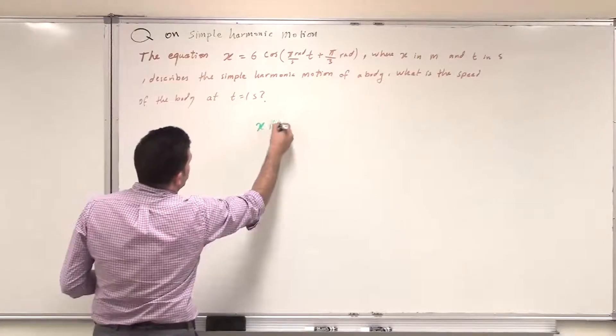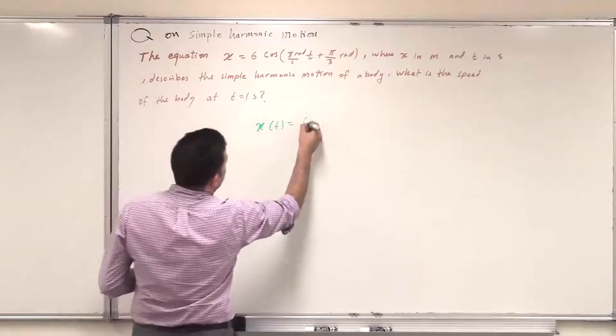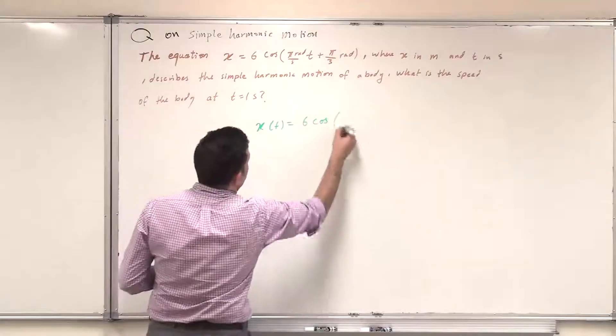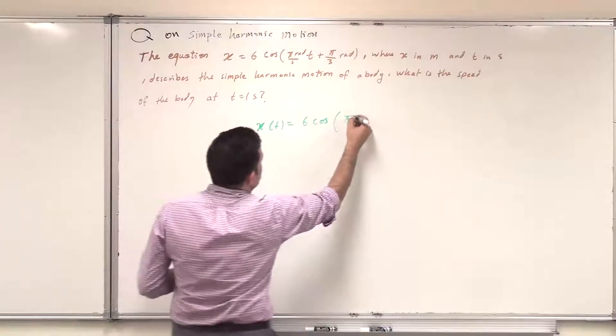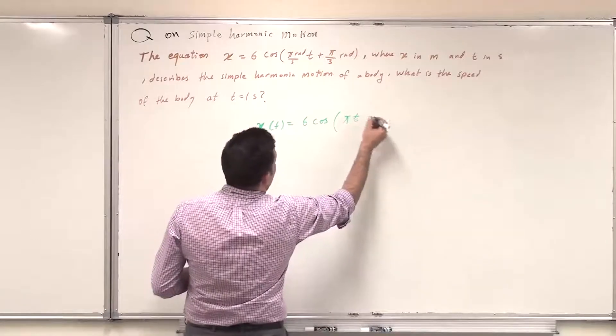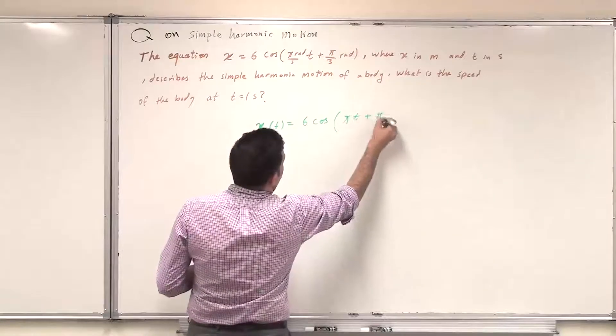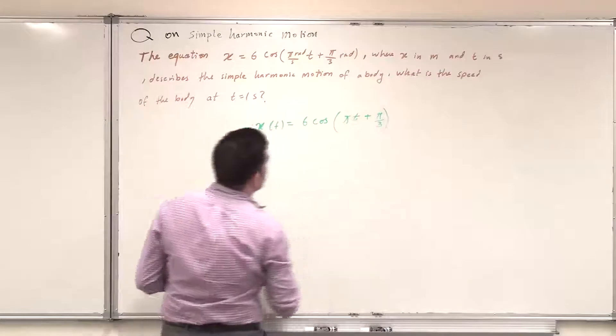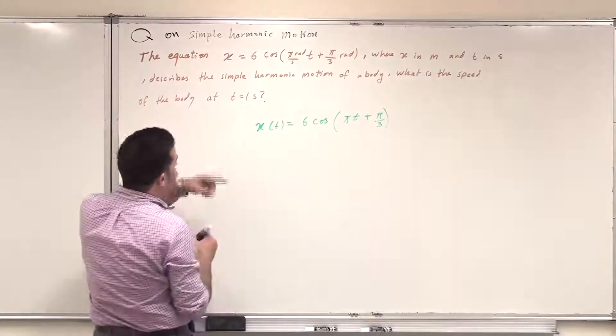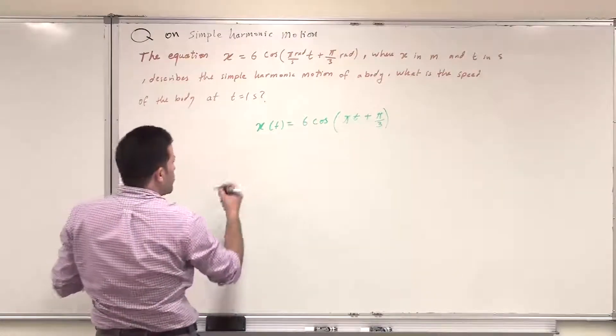So x as a function of t is 6 cos(πt + π/3). So in order to find the speed at t equal 1, first we get the speed.